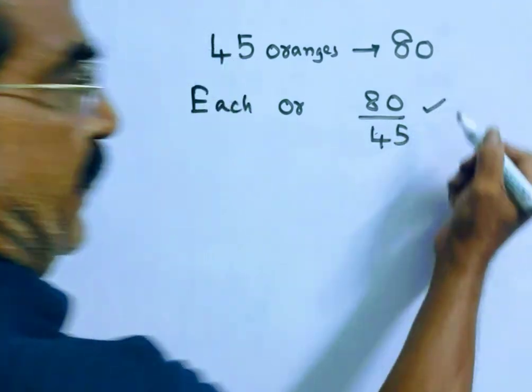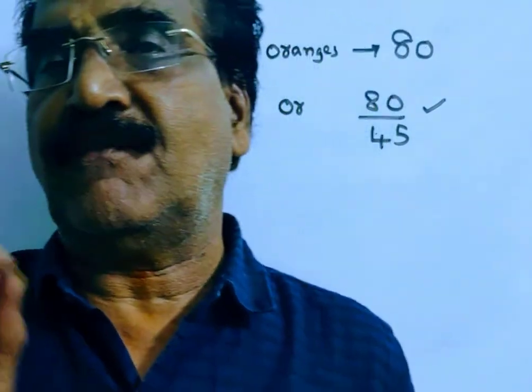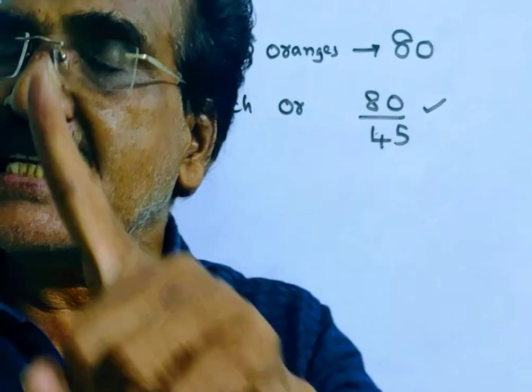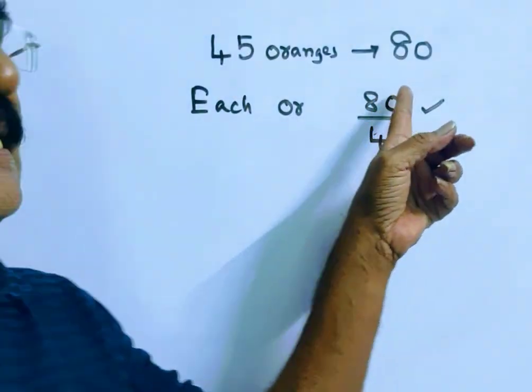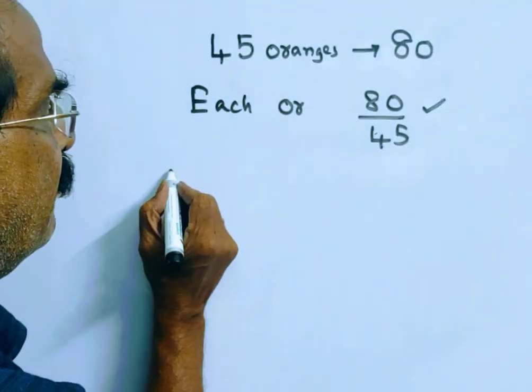Friends, this selling price is equal to 80% of the cost price. Because by selling at this price, he is getting a loss of 20%. So, this selling price, 80 by 45, is equal to 80% of the cost price.